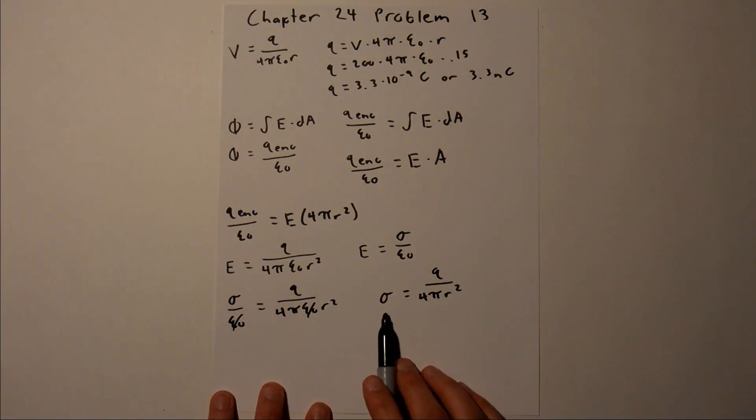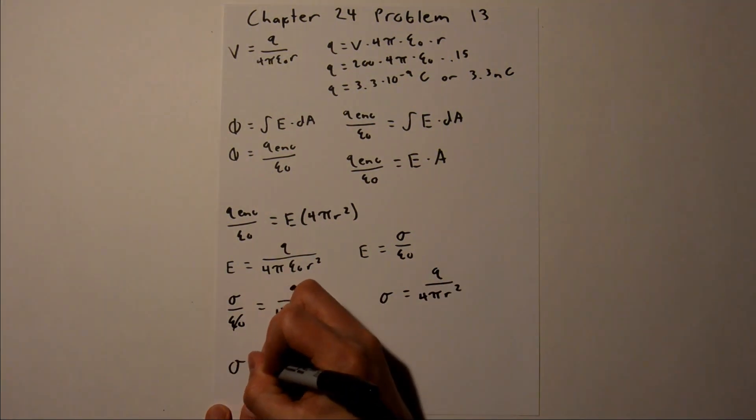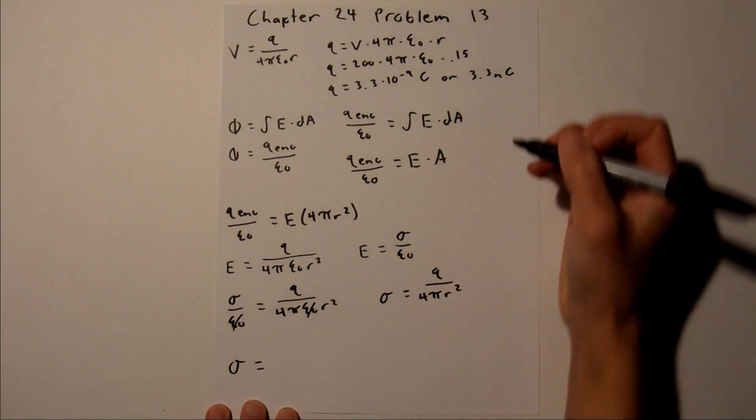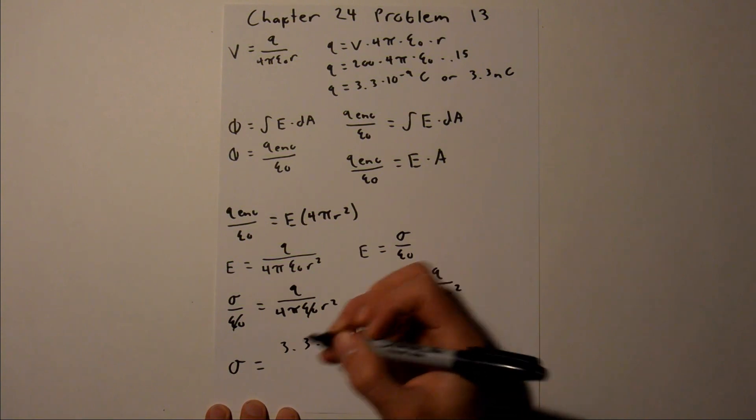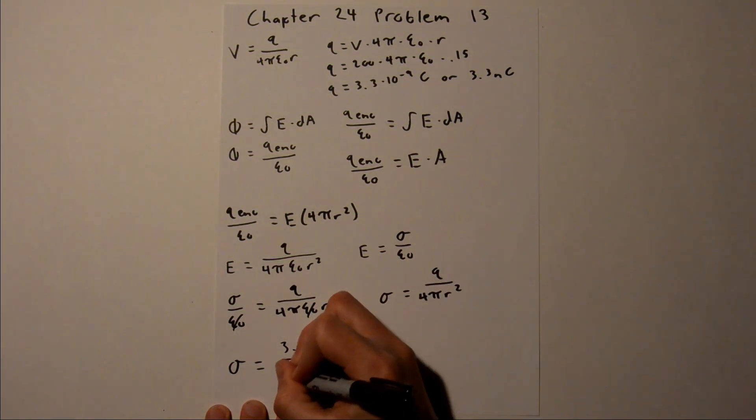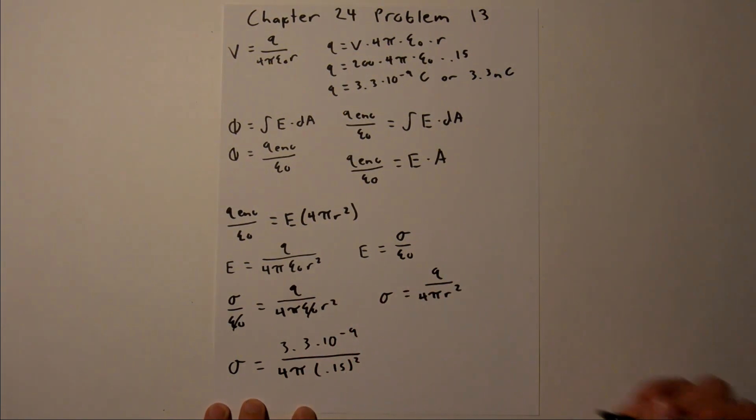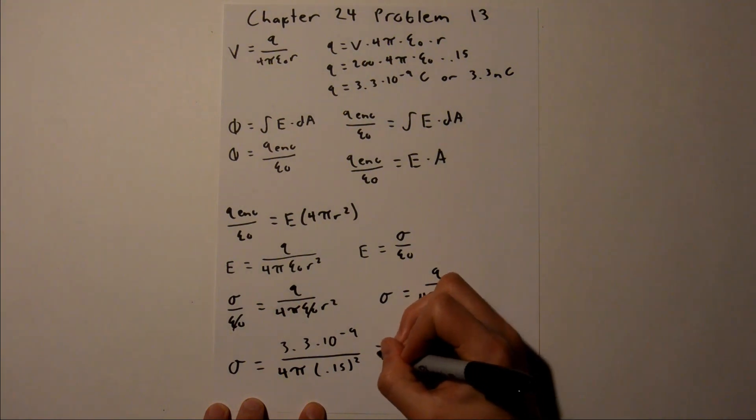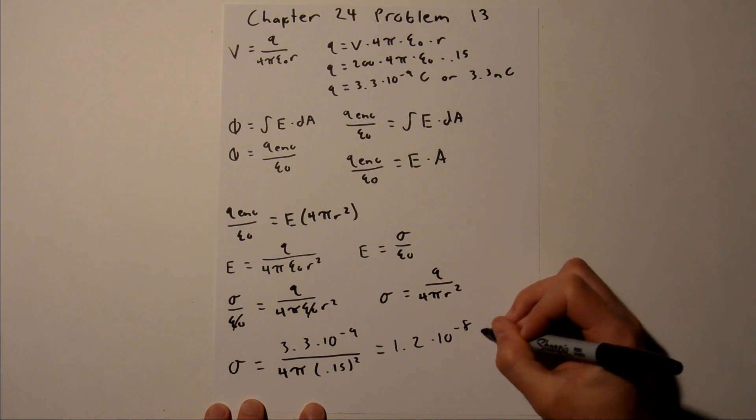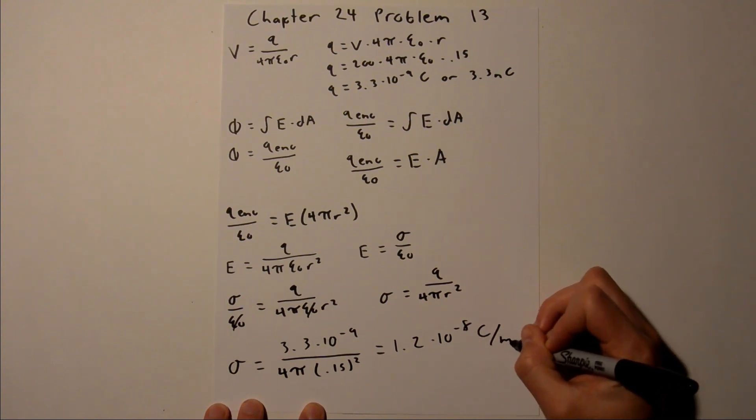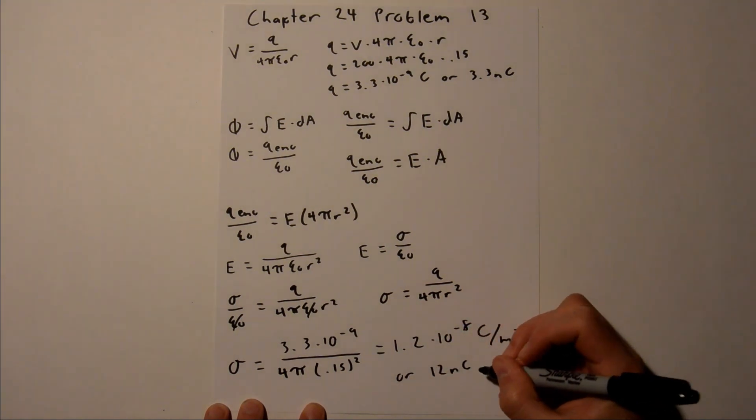And sigma, the charge density, is what we are solving for. So we have all these values, so we can plug them in. Sigma is equal to charge, which we solved up here. So 3.3 times 10 to the negative 9th, over 4 pi, and our radius is 0.15, so 0.15 squared. And when you plug that into your calculator, you should get 1.2 times 10 to the negative 8th coulombs per meter squared, or 12 nanocoulombs per meter squared.